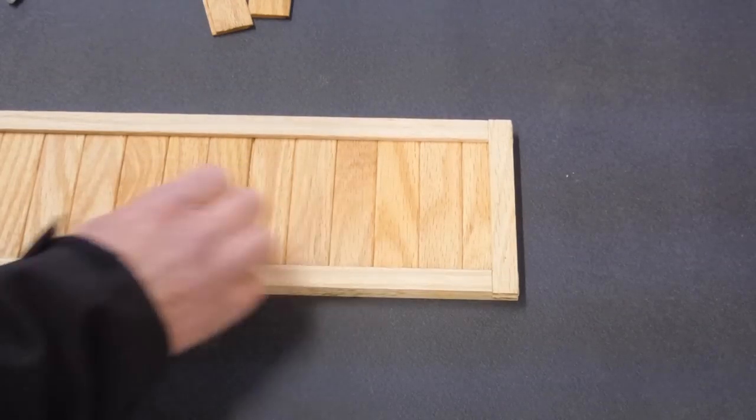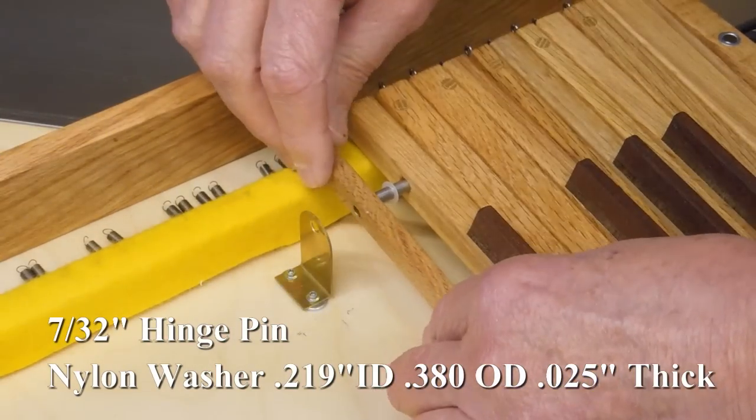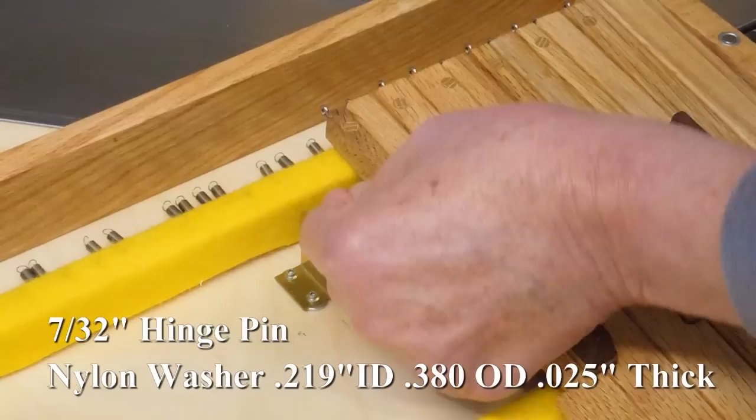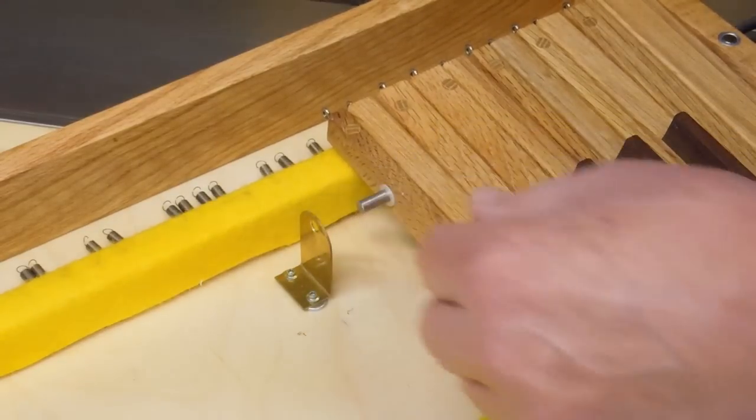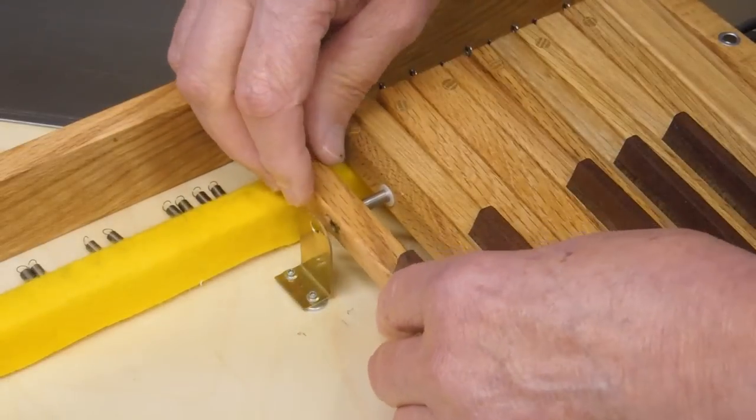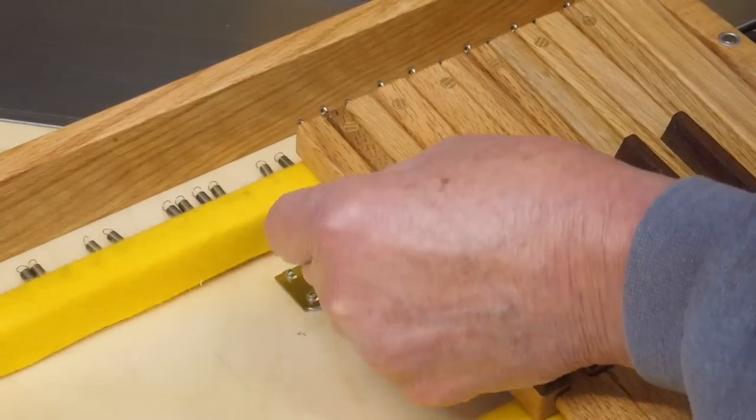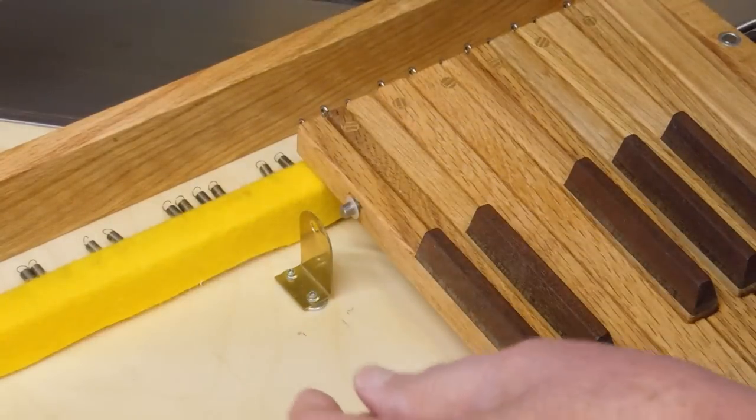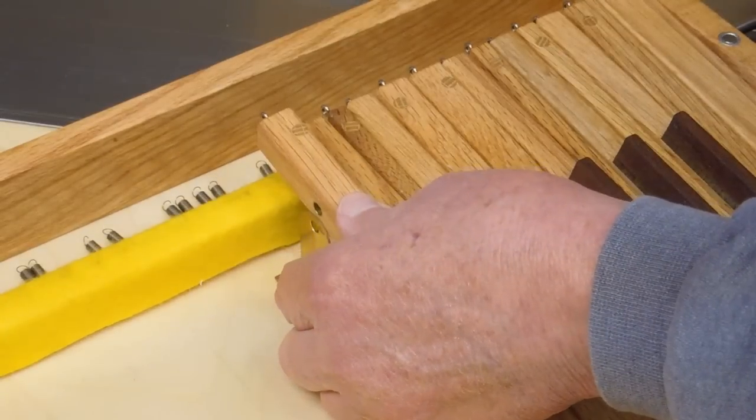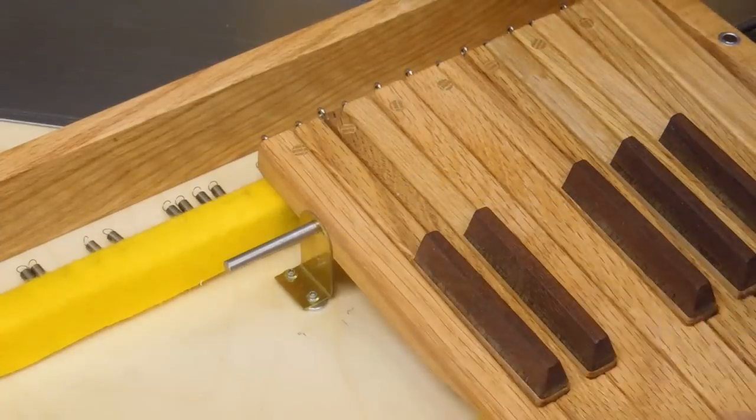It looks better. I'm using a nylon spacer between each key, and then there's no spacer when it comes through this metal support.